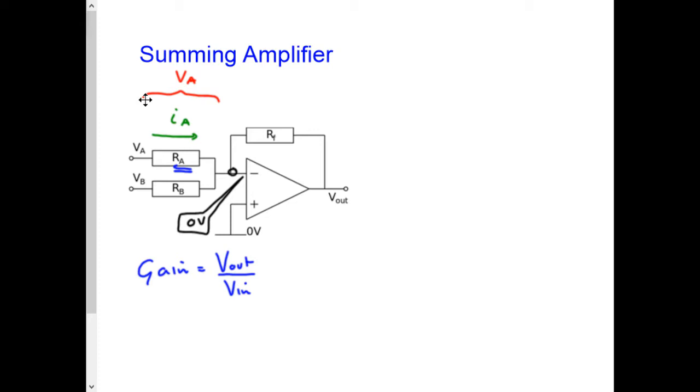Similarly, I have a current IB flowing into my other input resistor due to voltage input VB, so this potential difference is VB.